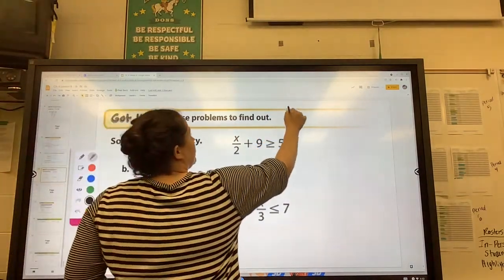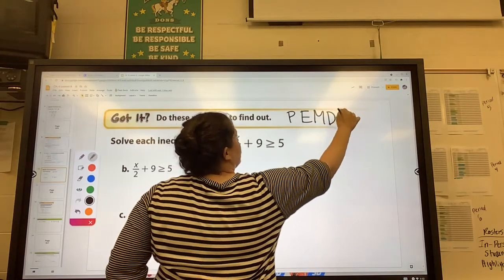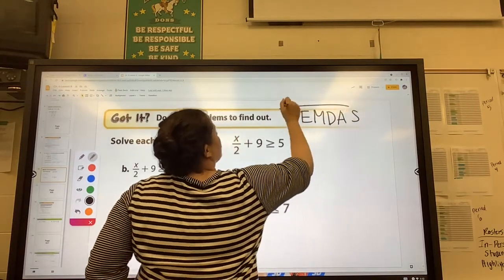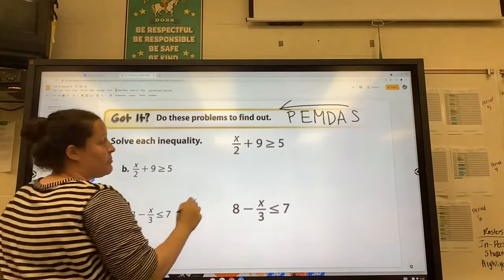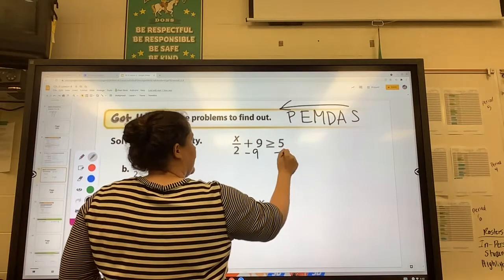So remember, we're using reverse order of operations. I should have put this up there, but in reverse. So we'll start with addition and subtraction. So we're going to subtract 9, subtract 9.